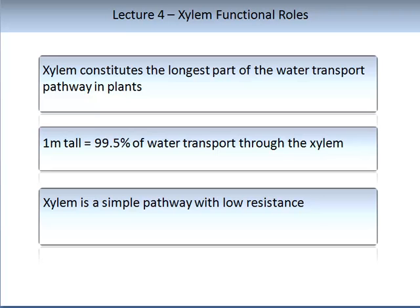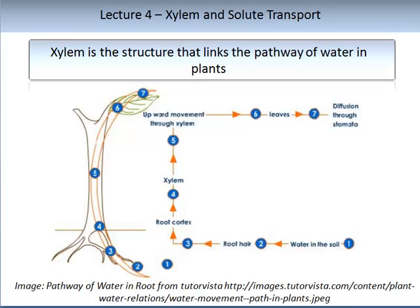Xylem is a simple pathway with low resistance. The route of solute transport, in simple terms, is from the soil matrix, through the root hair, through the root cortex, into the xylem, and upwards into the leaves. If the substance is water, it is then diffused through the stomata.